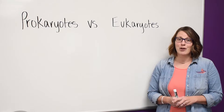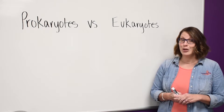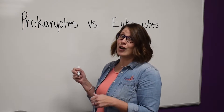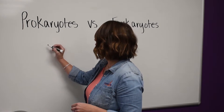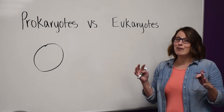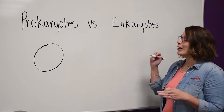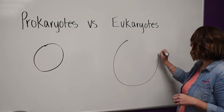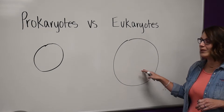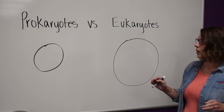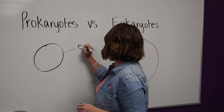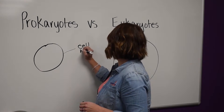There are some things that set these two types of cells apart that we're going to talk about today, and I'm going to draw them out for you so you can actually see it. Let's first talk about size — prokaryotes are a lot smaller than eukaryotes. I'm going to draw a structure on the very outside of every single cell, for both prokaryotes and eukaryotes, and that's called the cell membrane. Prokaryotes are drawn smaller because they are a lot smaller.